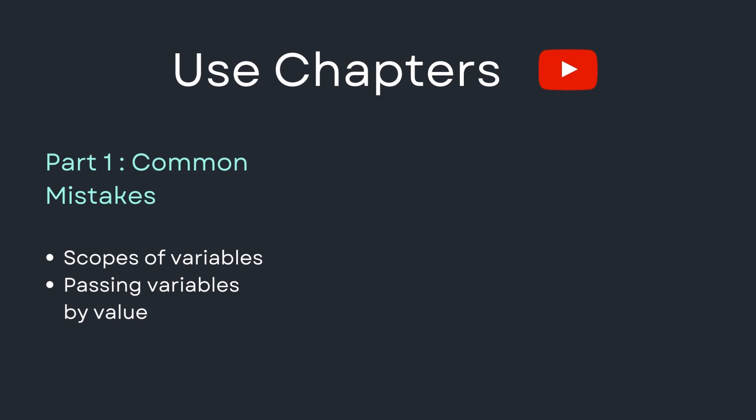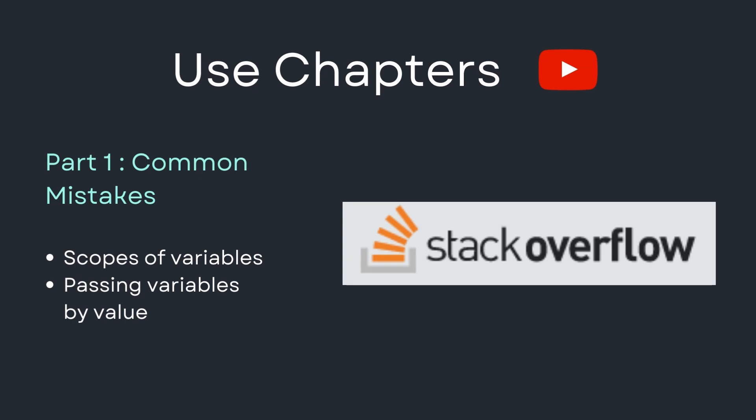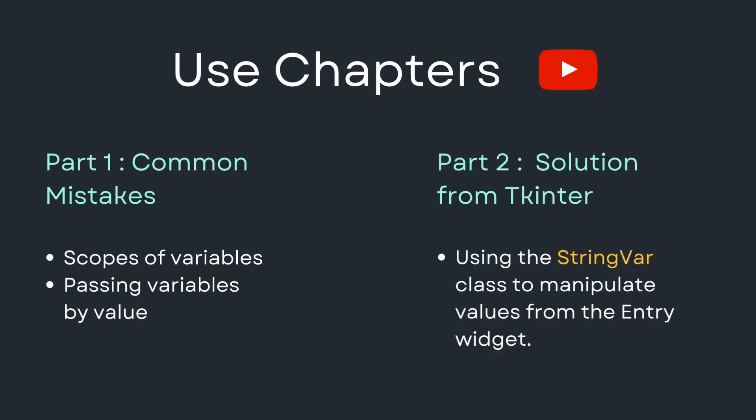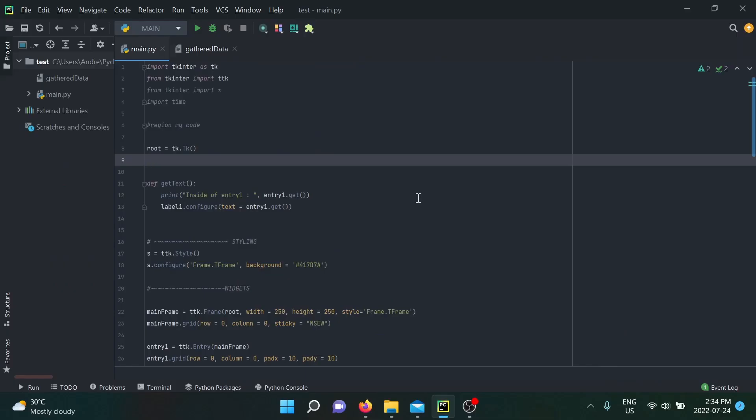The first part I'm going to talk about is common mistakes — how people try to manipulate the values from an entry widget. This is something I found on Stack Overflow and I think it's worthy of mentioning for complete beginners. If you're past that, you can go on to part two where I will show you the solution from tkinter using StringVar.